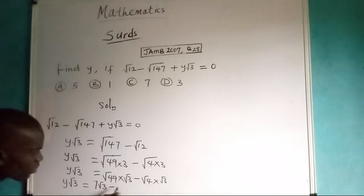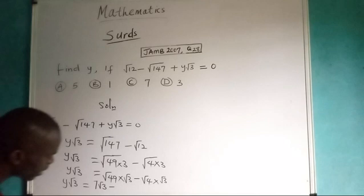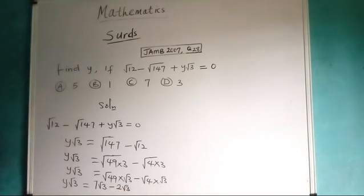For this one, don't forget that 4 is also a perfect square. Therefore, if I do that, I will have 2. It will become 2√3. This is what I have.